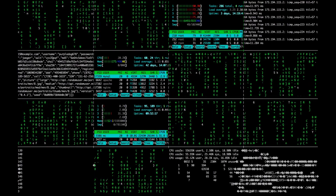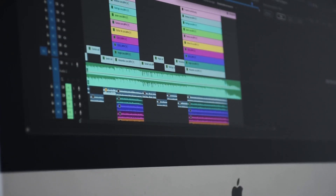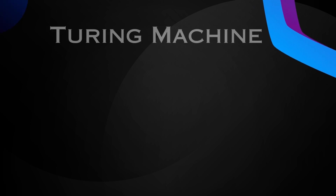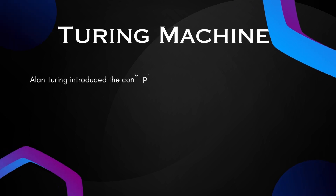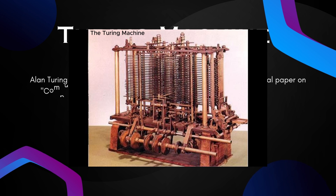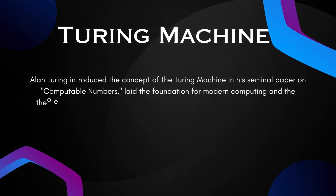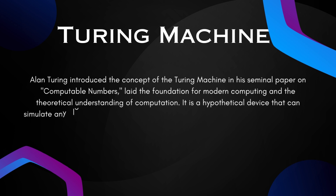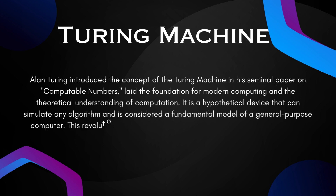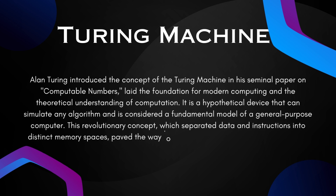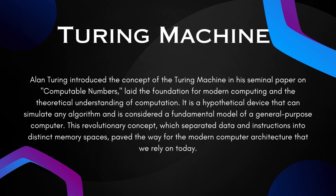Let's dive into the extensive list of his contributions that have shaped the field of computer science. The Turing machine: Alan Turing introduced the concept of the Turing machine in his seminal paper on Computable Numbers, which laid the foundation for modern computing and the theoretical understanding of computation. It is a hypothetical device that can simulate any algorithm and is considered a fundamental model of a general-purpose computer. This revolutionary concept, which separated data and instructions into distinct memory spaces, paved the way for the modern computer architecture that we rely on today.